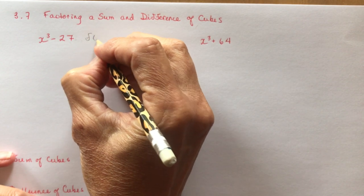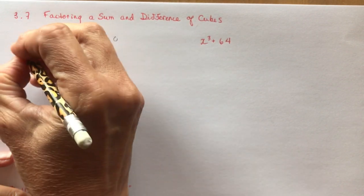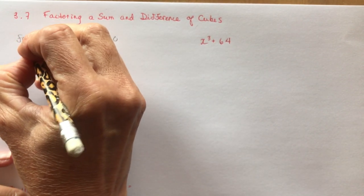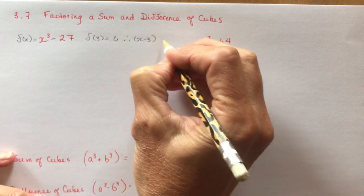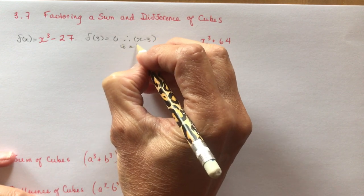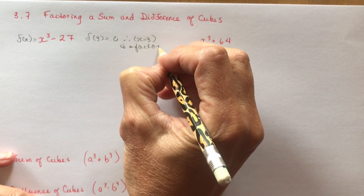f at 3 equals 0. So we would let this equal to f at x first. So f at 3 equals 0, therefore x minus 3 is a factor.